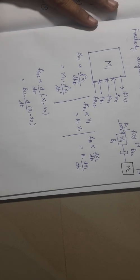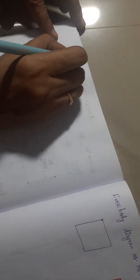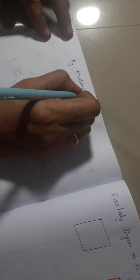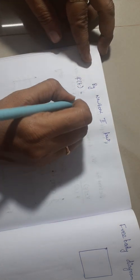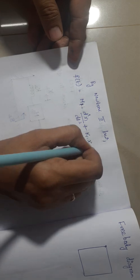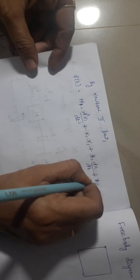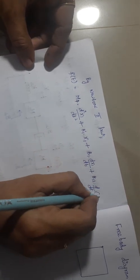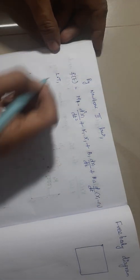Now applying Newton's second law: applied force equals the sum of opposing forces. The applied force is f(t), and the opposing forces give us: f(t) = m1·d²x1/dt² + k1·x1 + b1·dx1/dt + b12·d/dt·(x1 - x2).